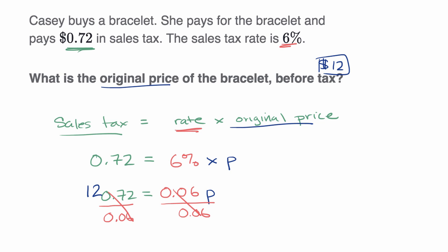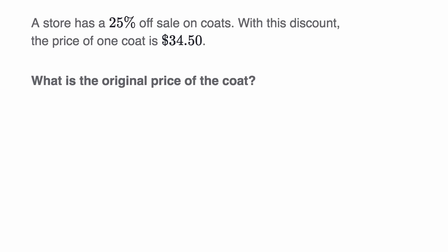Let's do another example. A store has a 25% off sale on coats. With this discount, the price of one coat is $34.50. What is the original price of the coat? Pause this video and see if you can figure it out. These examples are actually quite useful because you'll encounter this all the time when you're shopping or trying to calculate tax.